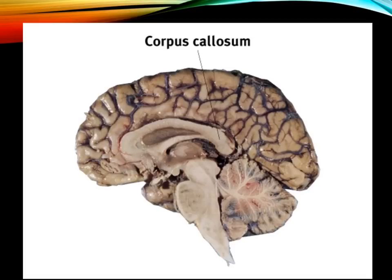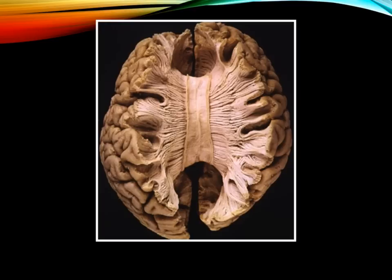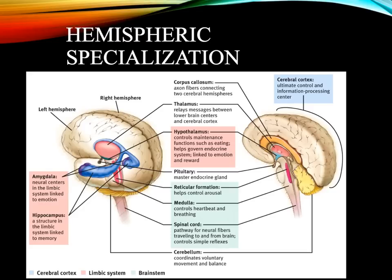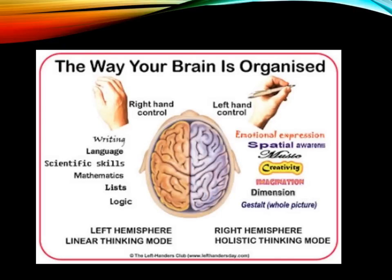Here we see a picture of the corpus callosum inside the brain. If you took a brain from the bird's eye view and cut it down the middle, you'd see the corpus callosum connecting the two hemispheres in the lower middle interior portion. The right side of your brain processes more emotional expression, spatial awareness, musical understanding, and creativity, while the left hemisphere tends toward more linear thinking like writing, language skills, scientific skills, mathematics, and logistics. However, remember the corpus callosum connects both sides so they work in harmony with one another.